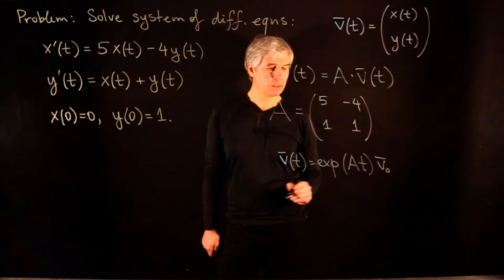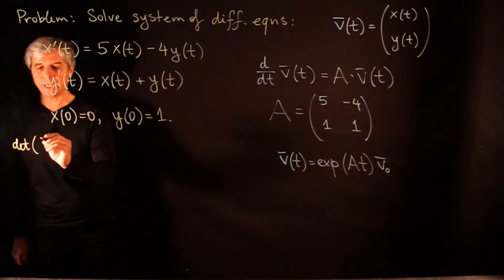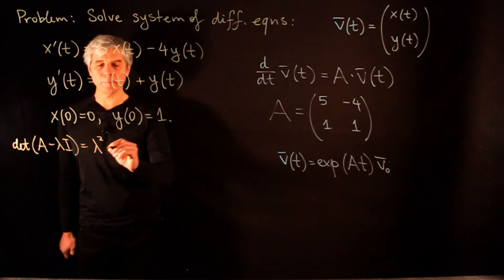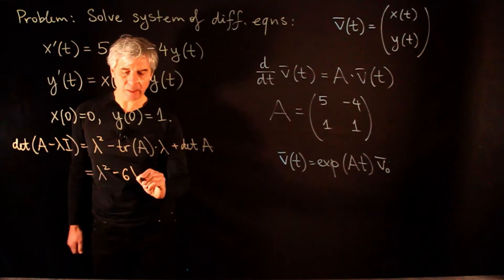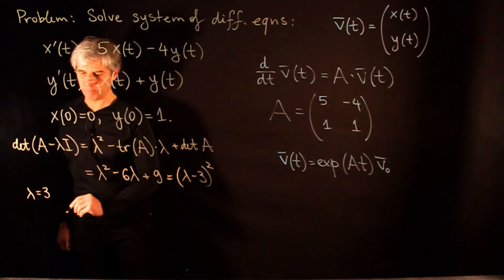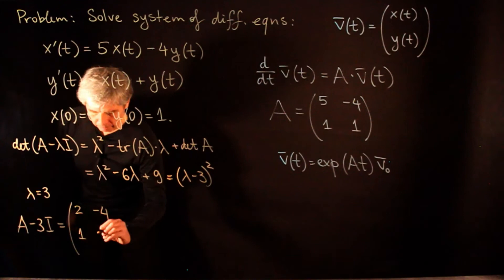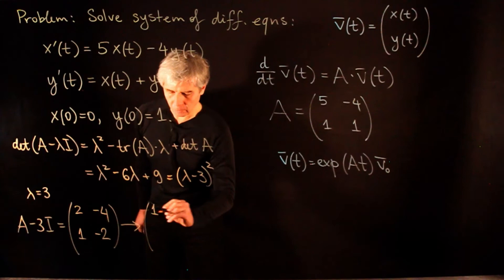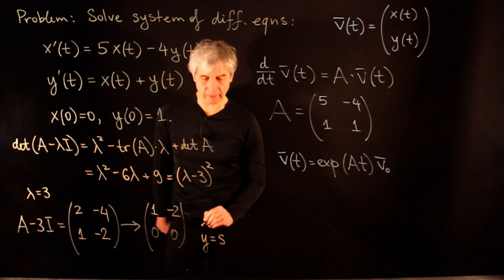To compute this exponential, we look at eigenvectors and eigenvalues of A. The characteristic polynomial det(A - λI) = λ² - trace(A)·λ + det(A) gives λ² - 6λ + 9 = (λ - 3)². So there is a single eigenvalue λ = 3. The matrix A - 3I equals [2, -4; 1, -2], which reduces to [1, -2; 0, 0] in row echelon form. The variable y is free (set y = s), so x = 2s, giving eigenvector v1 = (2, 1) with eigenvalue λ = 3.